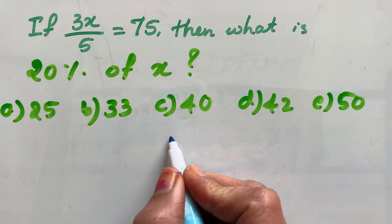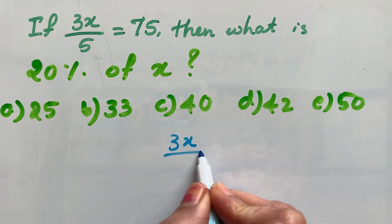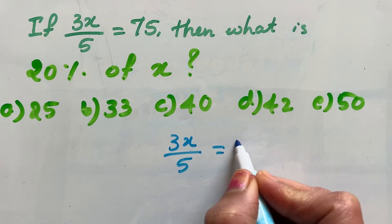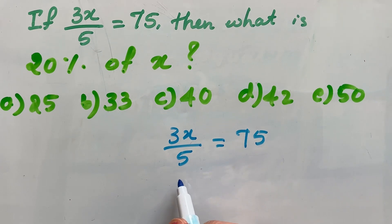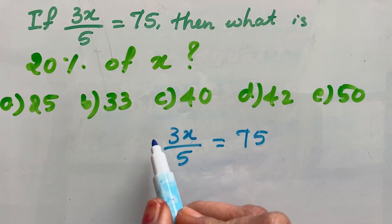What's given here? 3x over 5 is equal to 75. That means first you have to find x here, the value of x using this given equation. Then you have to find 20% of x.